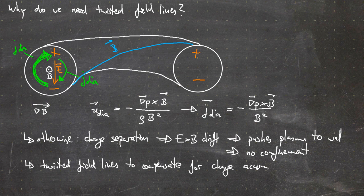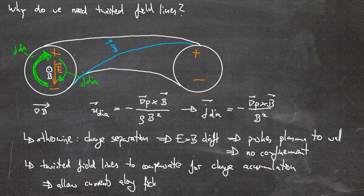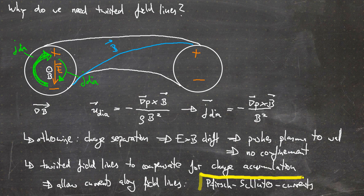The twisted field lines are therefore necessary to compensate for the charge accumulation, since they allow currents to flow along the field lines. These currents have a name — they are called Pfirsch-Schlüter currents. I've derived the necessity for twisted field lines here in the fluid picture, but you can do the same in the particle picture using the gradient drift and curvature drift, with the same result.